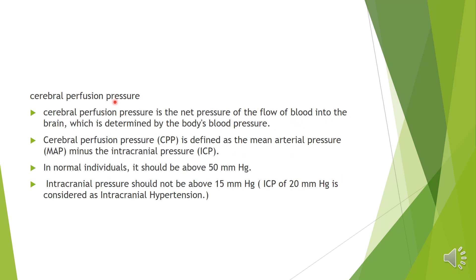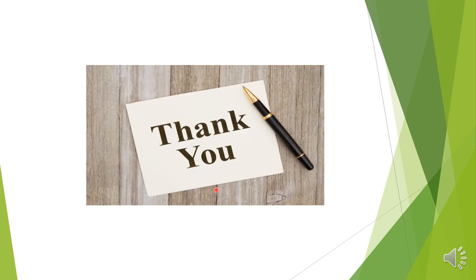Next, about cerebral perfusion pressure. The short form is CPP — cerebral perfusion pressure. It is the net pressure of blood flow into the brain, determined by the body's blood pressure. The equation is CPP equals MAP minus ICP. In normal individuals, the normal CPP should be above 50 mmHg and the normal ICP should be below 15 mmHg.